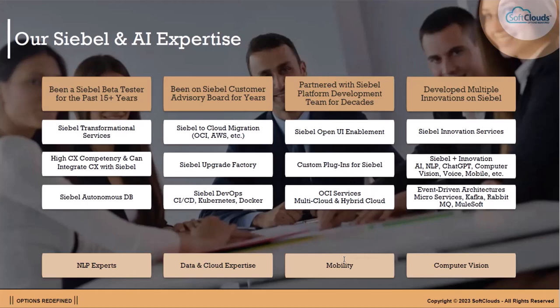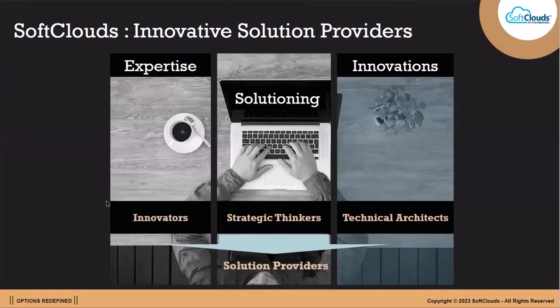Soft Clouds is using the Siebel Upgrade Factory for migrating from lower to higher patch levels. They have CI/CD pipelines, expertise in Kubernetes and Docker, and use Siebel Autonomous Database, which makes migrations easier. Saravana thanks Alex for the Siebel Upgrade Factory documentation. Any questions can be directed to Saravana, whose email will be shared in chat.